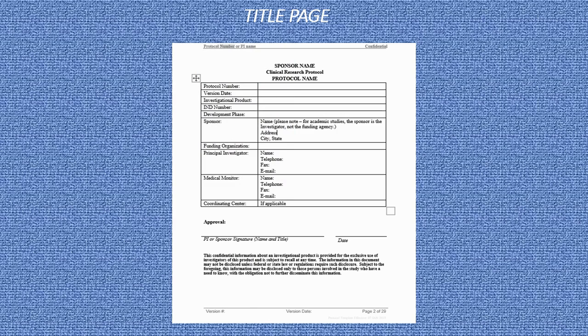The first page of a protocol is usually a title page. The title page includes information such as the protocol number, version date, investigational product, IND number (which is the Investigational New Drug application number), development phase — including a description of phase one, two, three, four, and so on — details of the sponsor, funding organization, principal investigator details, and medical monitor details.